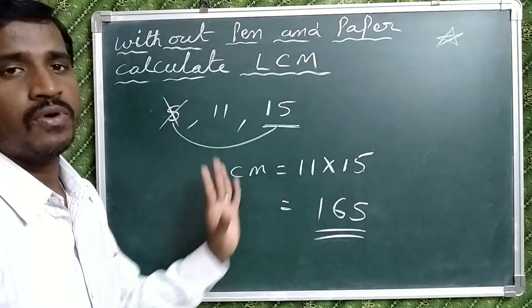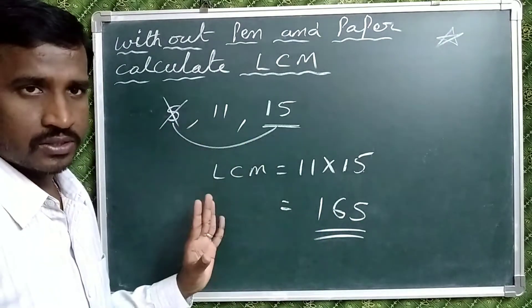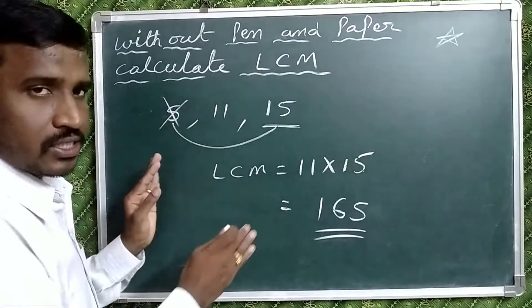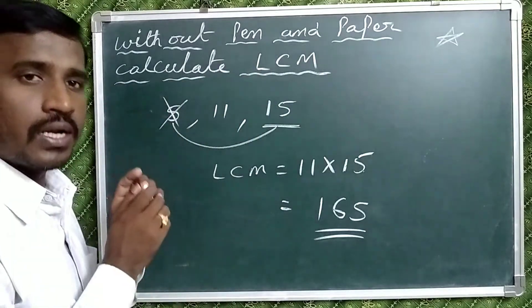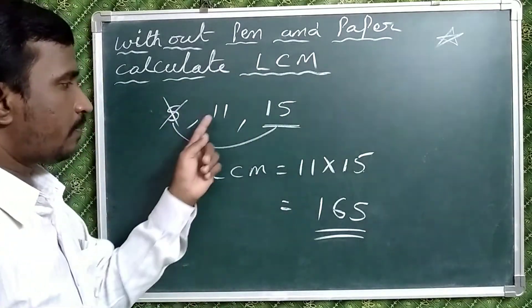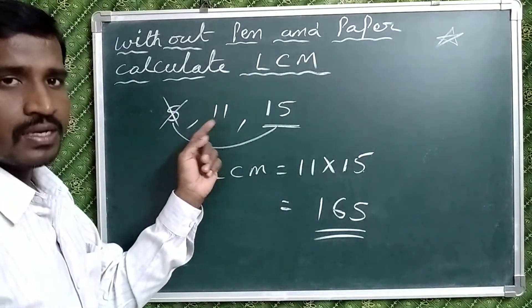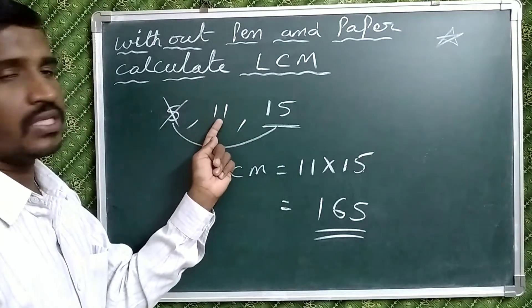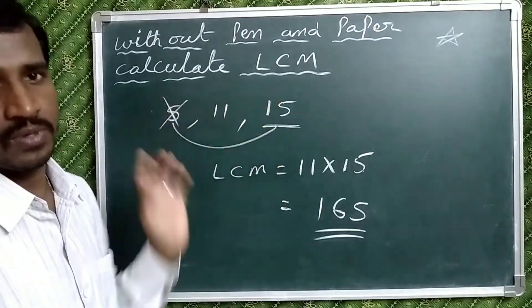That is the LCM of the given numbers. So in this case, when one of the numbers is a prime number, then multiply it with the highest number to get the LCM.